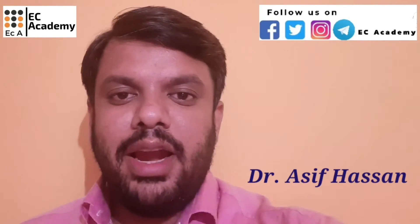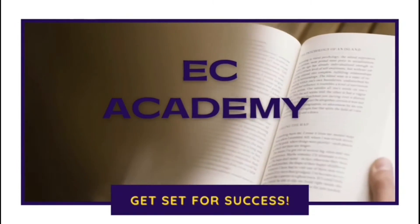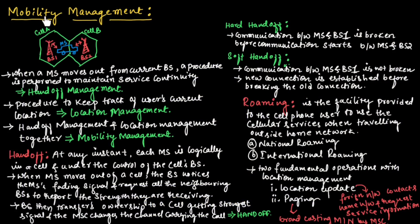Hello friends, welcome to ESA Academy. In this lecture, let us understand mobility management. To understand this, let us consider two cells, cell A and cell B, and a mobile station moving from cell A to B — switching from base station 1 to base station 2. When a mobile station moves out from the current base station, a procedure is performed to maintain service continuously. This process is known as handoff management.